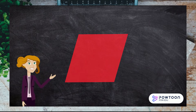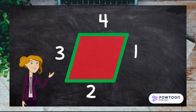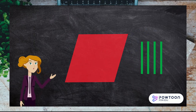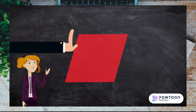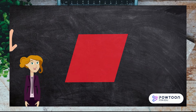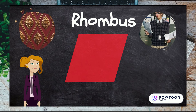This shape has four equal sides, just like a square, but it's been pushed over, so it has two different angles. It's called a rhombus. Can you say rhombus? Have you seen any other rhombuses around before?